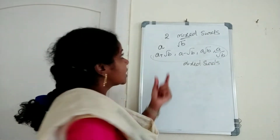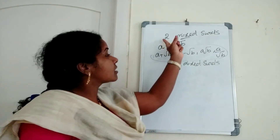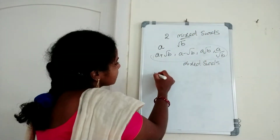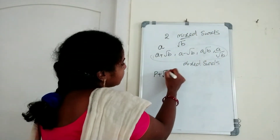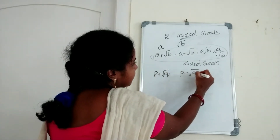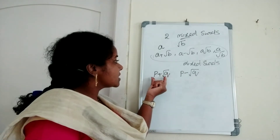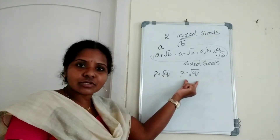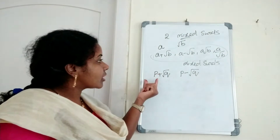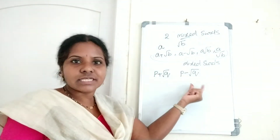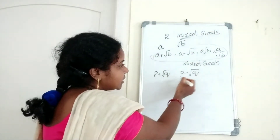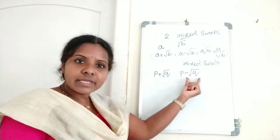Now, the sum and product of two mixed surds is a rational number. Suppose P plus root Q and P minus root Q — here this is a mixed surd and this is also a mixed surd. The sum and product of these two mixed surds is a rational number.